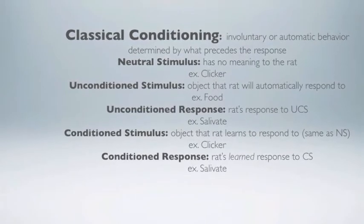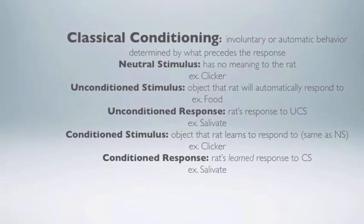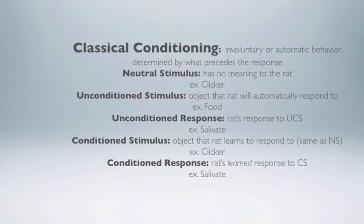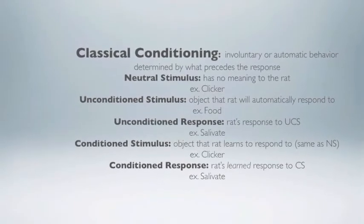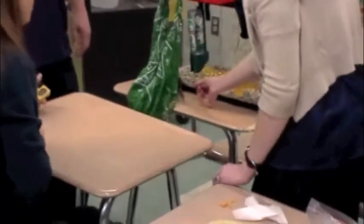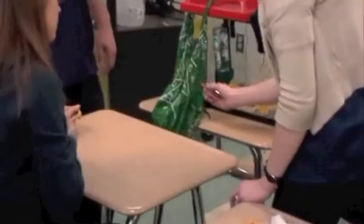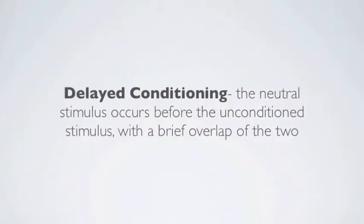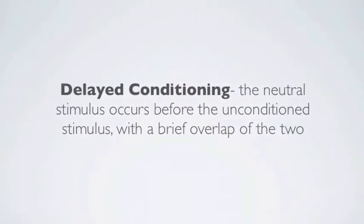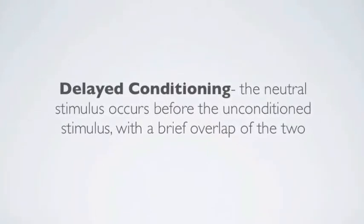Classical conditioning is involuntary or automatic behavior determined by what precedes the response. The unconditioned stimulus is the treat, the unconditioned response is salivation, the conditioned stimulus is the clicker, and the conditioned response is salivation. In delayed conditioning, the neutral stimulus occurs before the unconditioned stimulus with a brief overlap of the two.